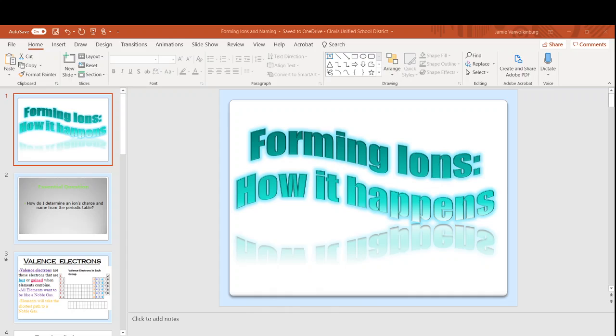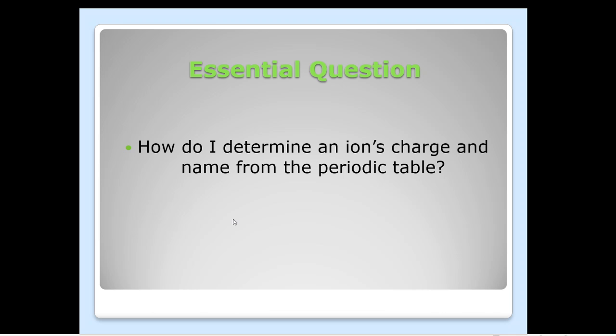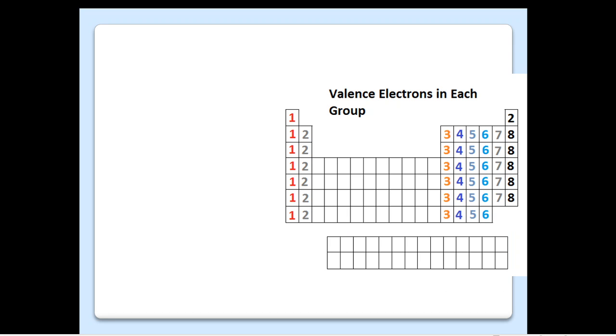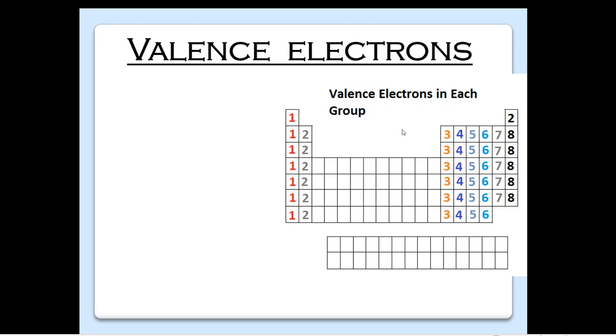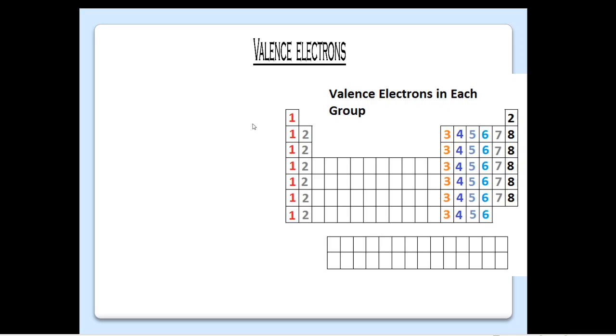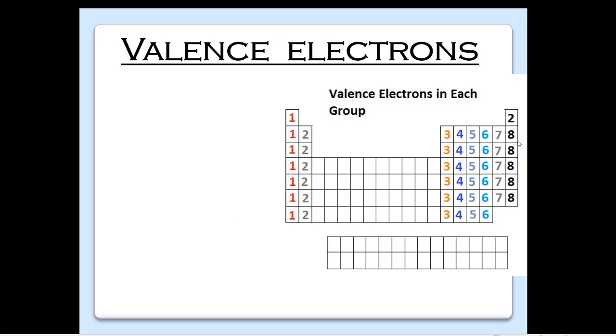So when we are talking about, this is our forming ion notes and how it happens. Our essential question for these notes is how do I determine an ion's charge and name from the periodic table? So you should have your periodic table open. If you haven't, go ahead, open up your notebook. You have your digital one or your printed one. So this is just an example, and remember we learned about valence electrons, and valence electrons are those ones on the outer energy level, and we learned how to figure out how many that is.